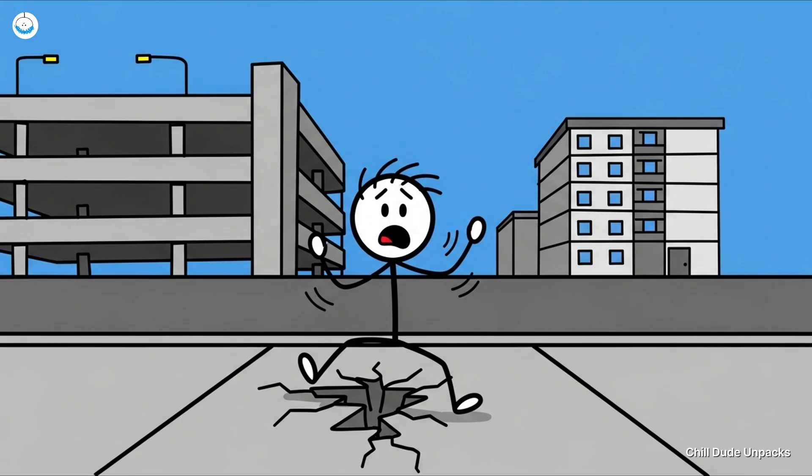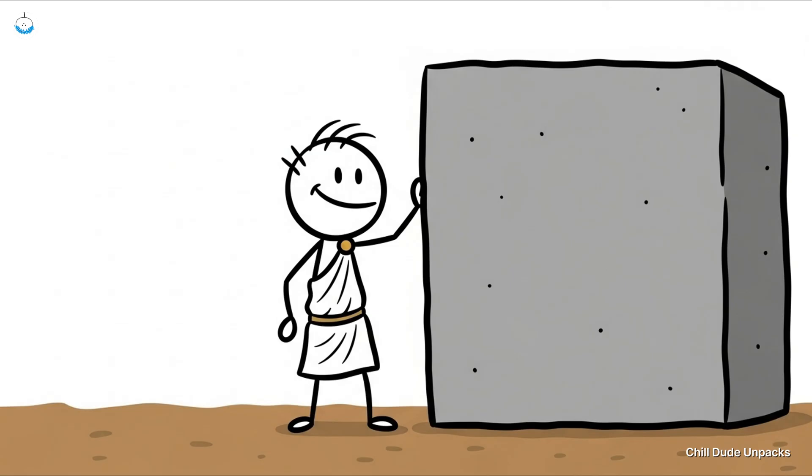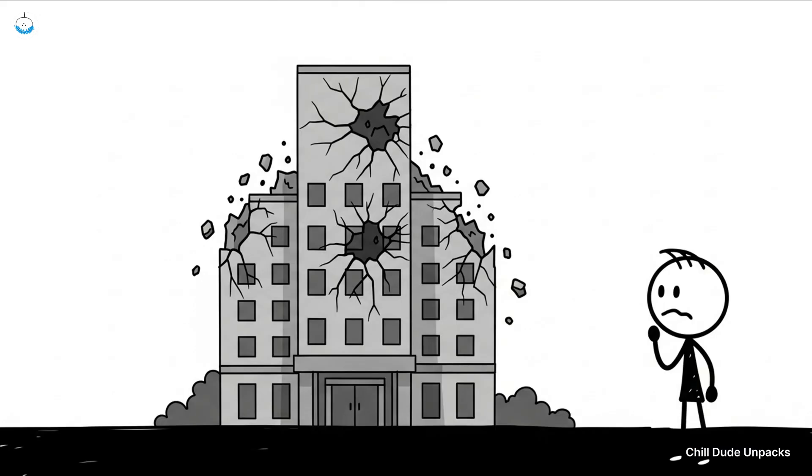Let's get right into it. Number one, concrete, the Roman recipe that refuses to die. You know that stuff holding up your parking garage, your apartment building, and probably the sidewalk you tripped over last week. Yeah, concrete. The Romans were slapping this stuff together over 2,000 years ago, and not the weak crumble-if-you-look-at-it-wrong kind we sometimes get today. Their version has been outliving empires.